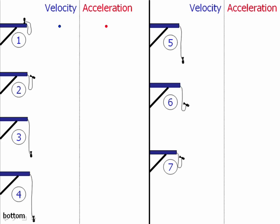At motion two, you're moving downward, so your velocity vector would point downward. Because you are speeding up, your acceleration vector would point in the same direction as your velocity vector — or downward.